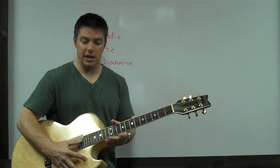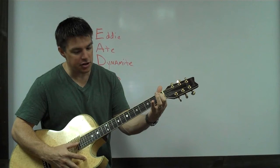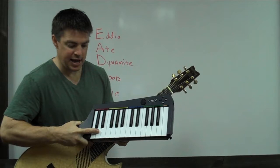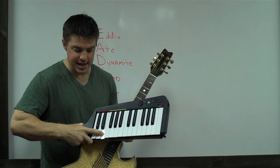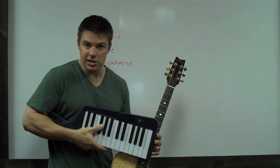Then you go to the next string — the fourth string, which is a D string. Open on the fourth string is D. The first fret is D sharp, then it's going to be E, then F, then F sharp, and you continue on up from there.